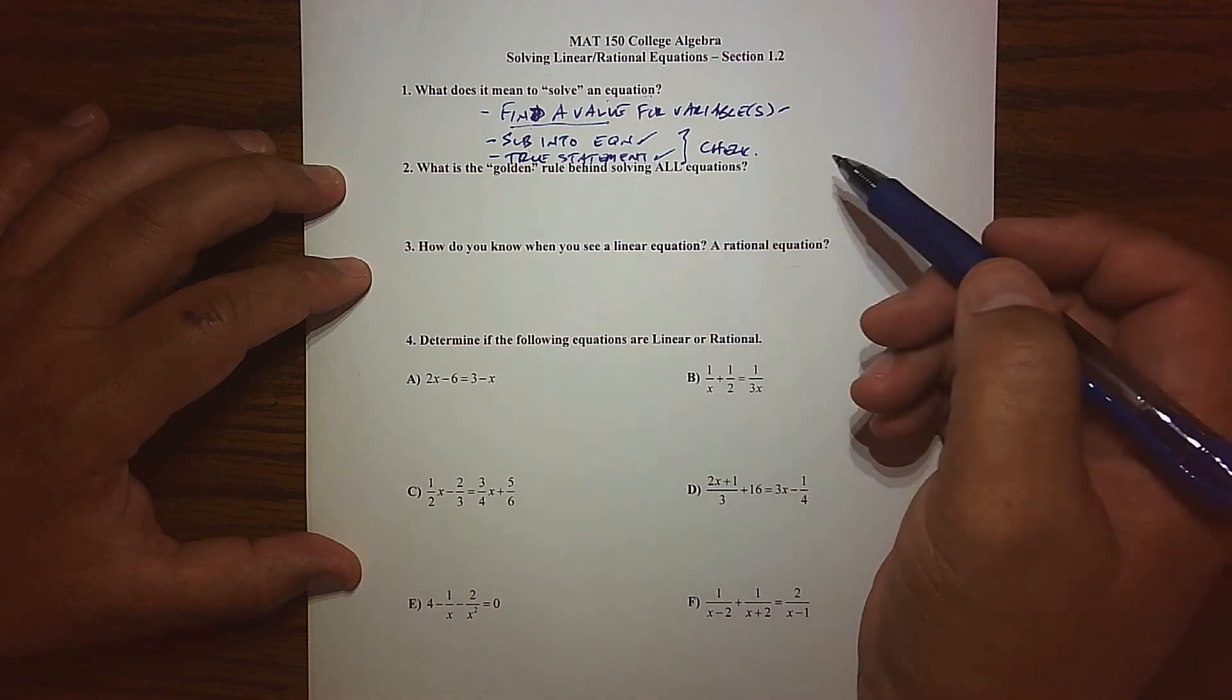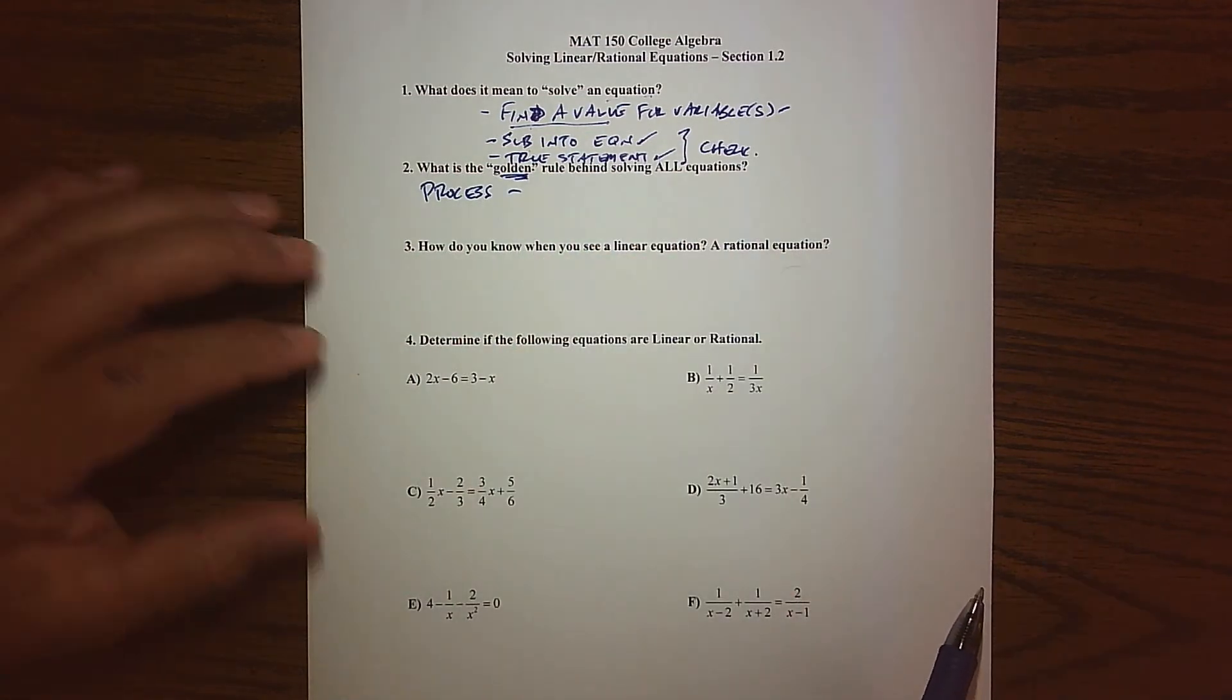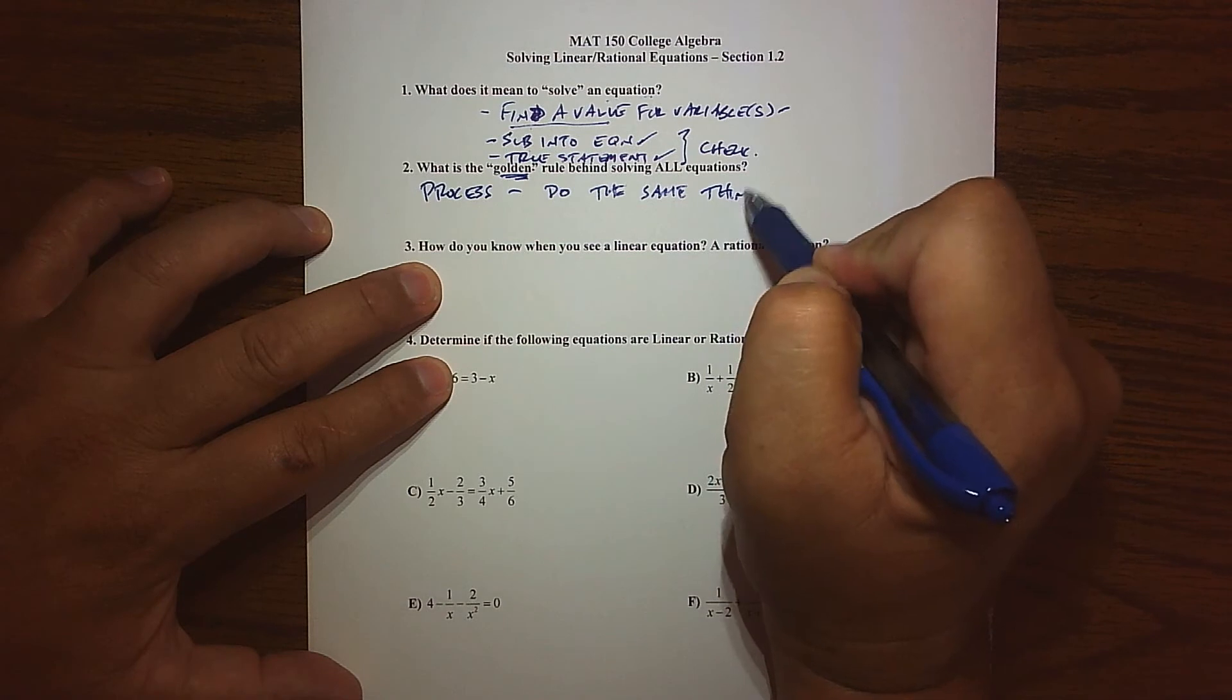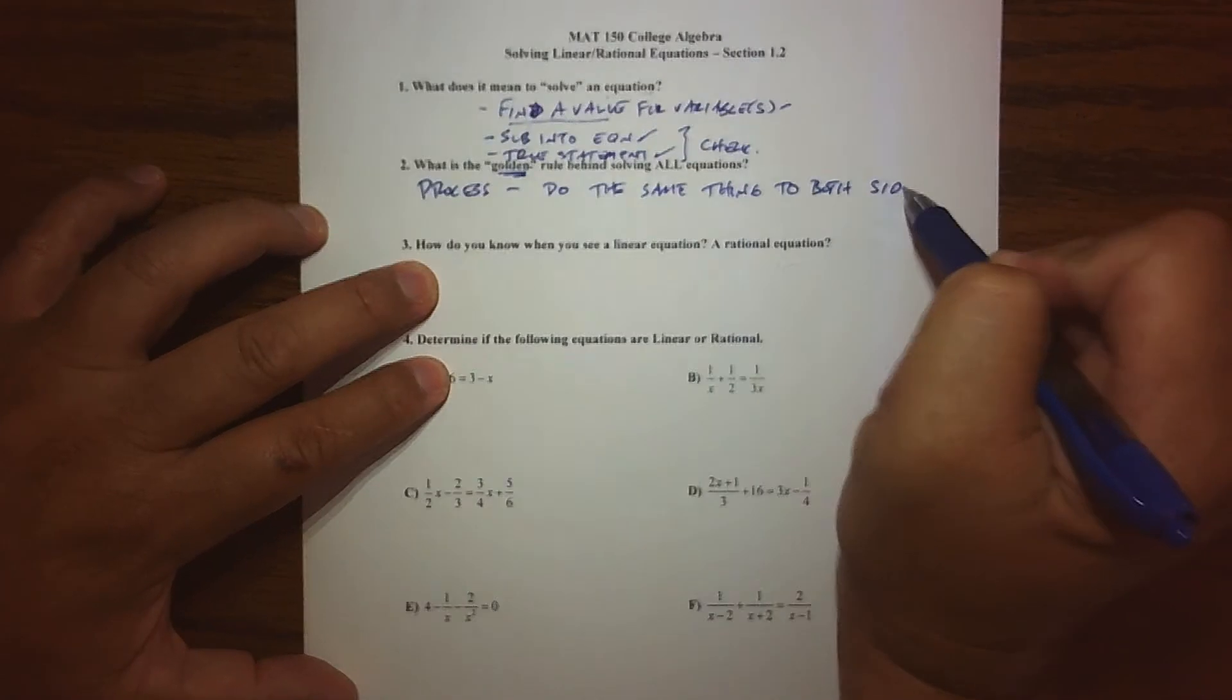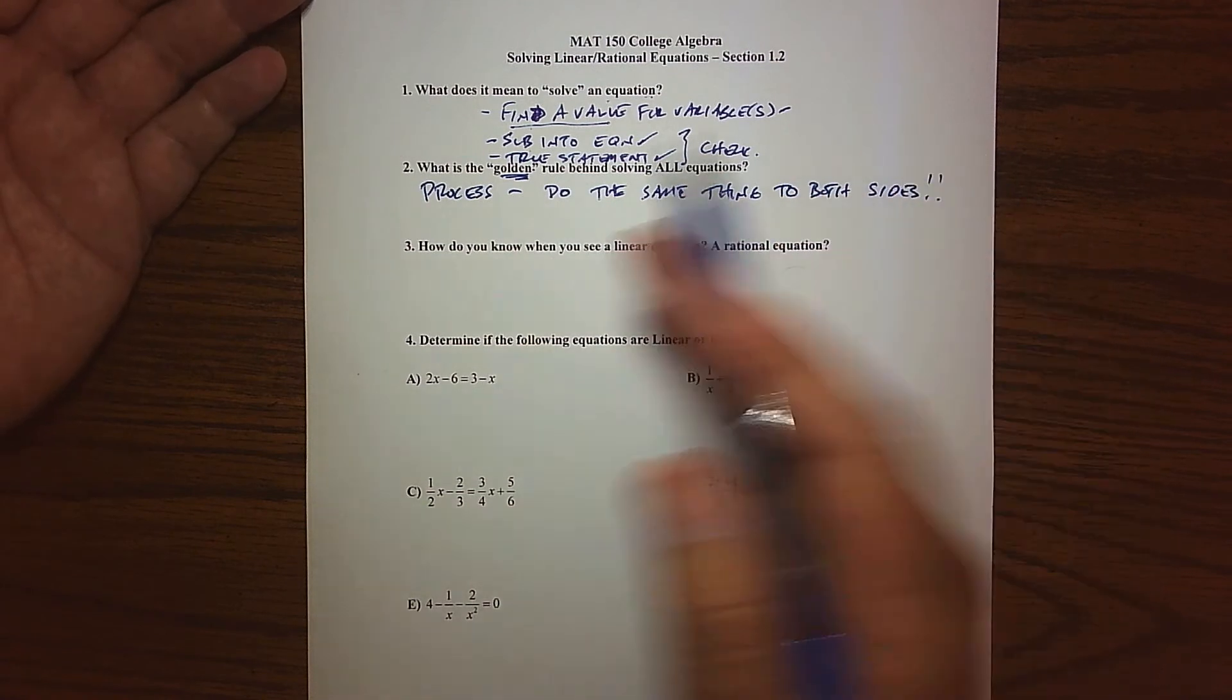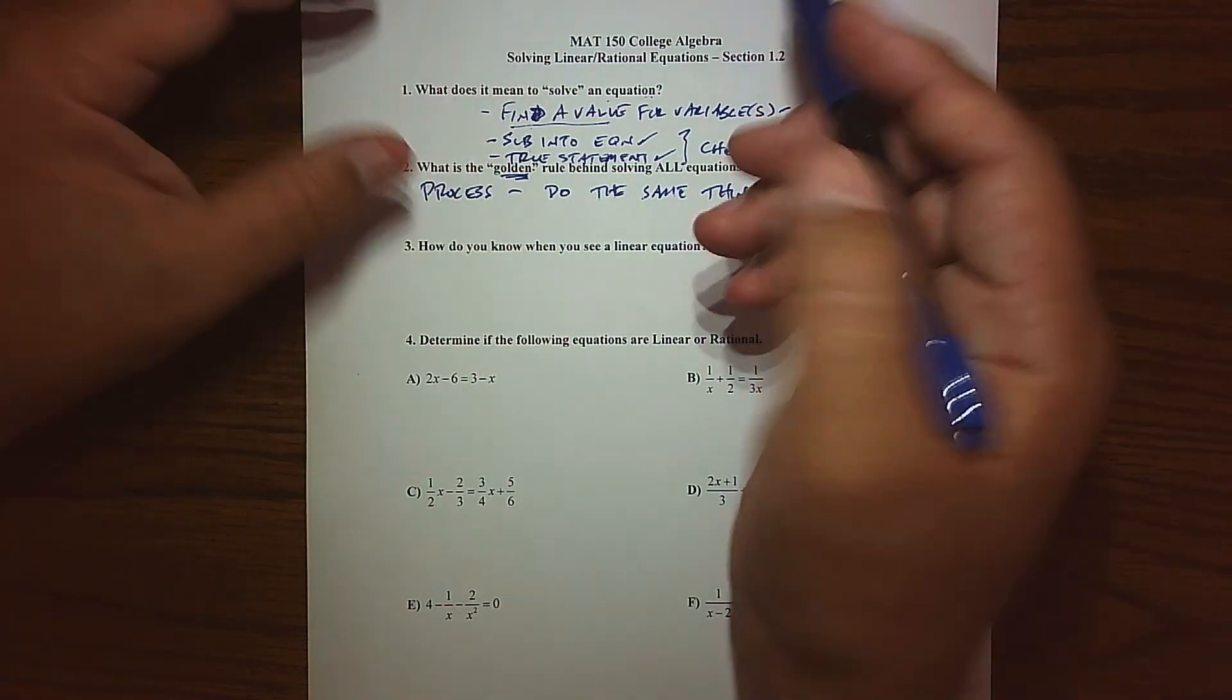In terms of solving it, the process, what we follow is commonly known, or I playfully call the golden rule. And that is basically, do the same thing to both sides. So if you add something to one side, you add it to the other. If you subtract something from one side, you subtract it from the other. If you decide to multiply something to one side, you have to do it to the other. This basically keeps us in balance, which, by the way, is what algebra means.